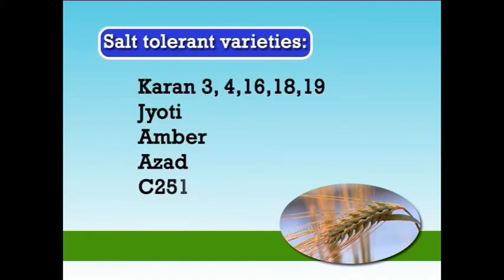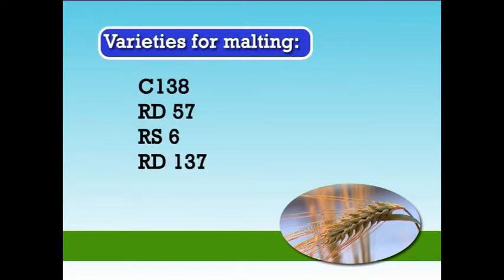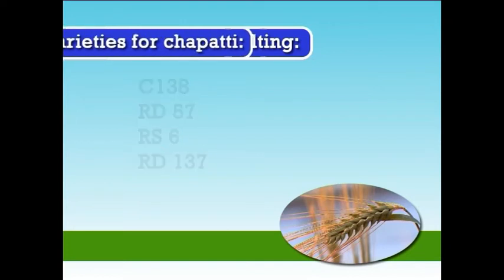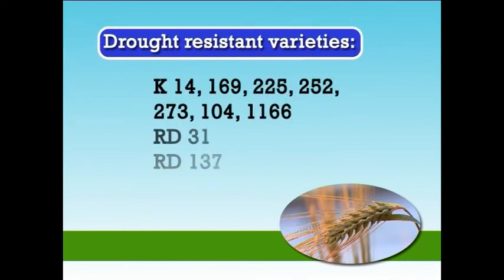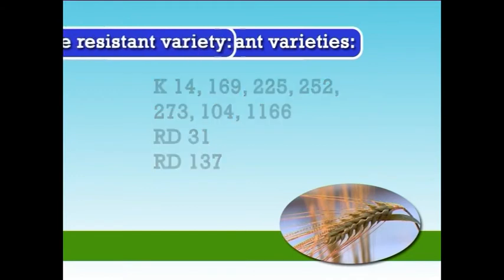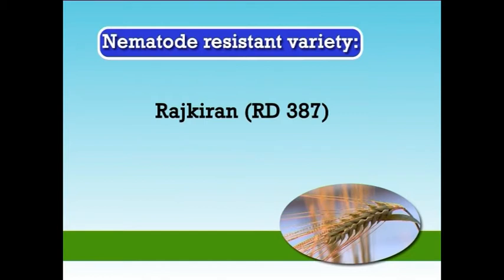Varieties for malting are C-138, RD-57, RS-6, and RD-137. Varieties for chapatis are Karan-16 (that is Neelam), Karan-19, and Kanpur-318. Drought resistant varieties are K-14, 169, 225, 252, 273, 104, 1166, RD-31, and RD-137. Nematode resistant varieties are Rajkiran, that is RD-387.